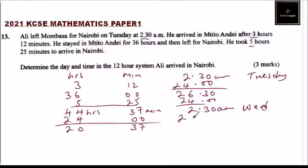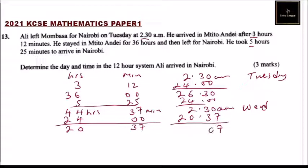Adding the remaining 20 hours and 7 minutes to 2:30 a.m. Wednesday gives us the arrival time. After carrying over 1 hour from the minutes column, we arrive at 3:07 — still on Wednesday.